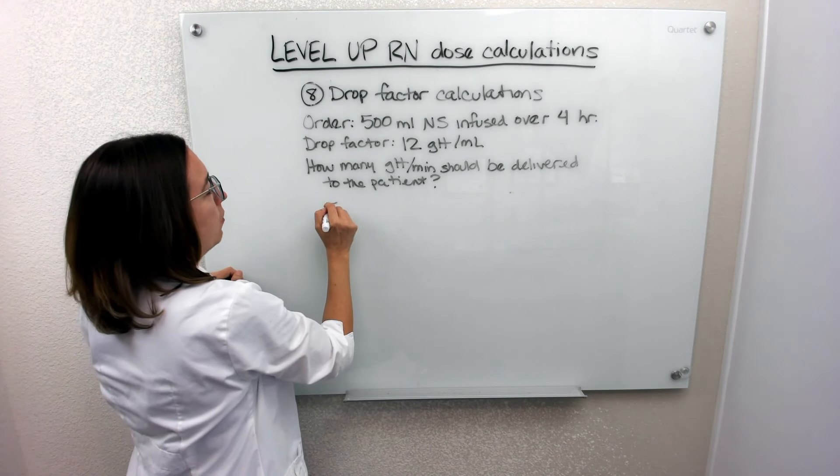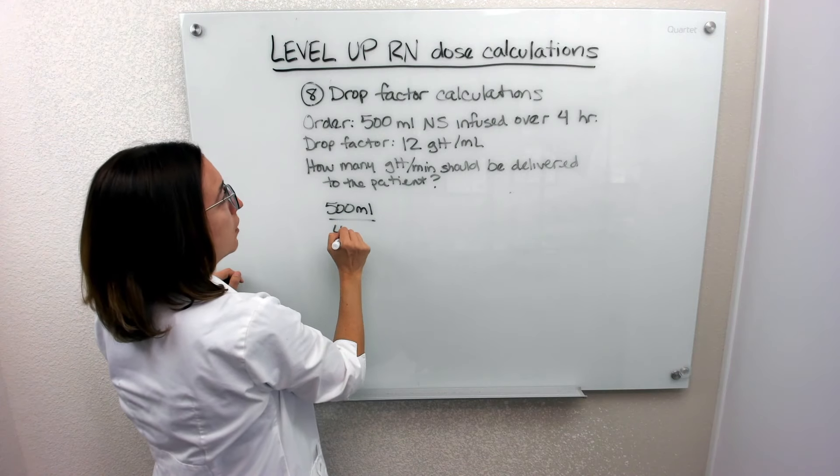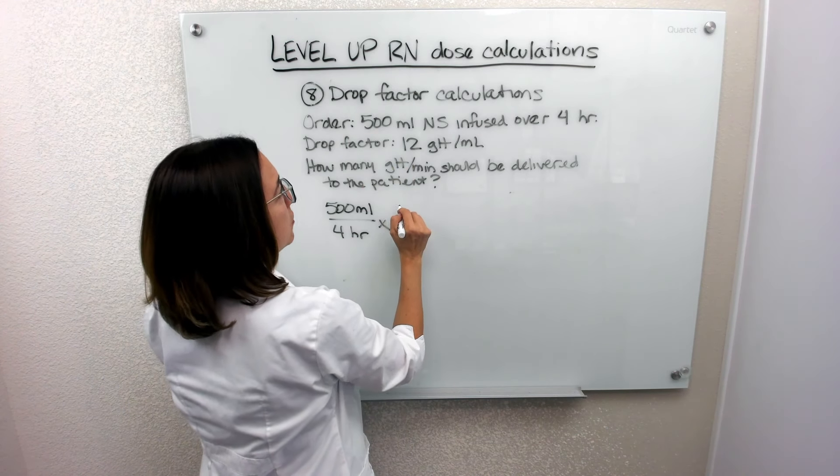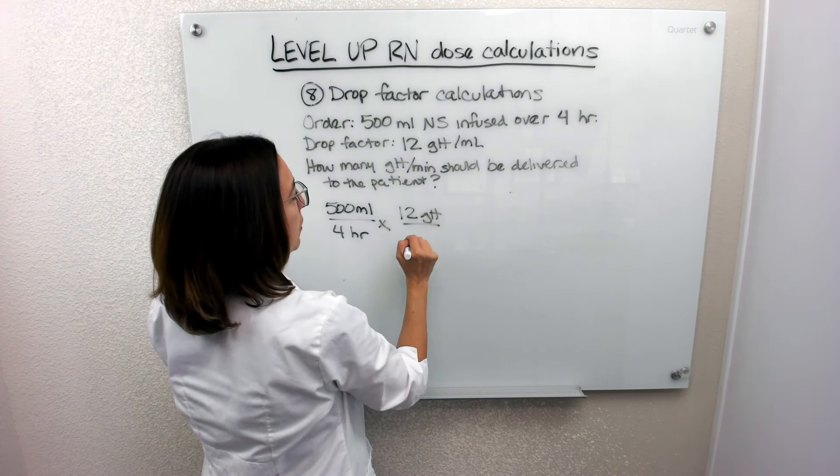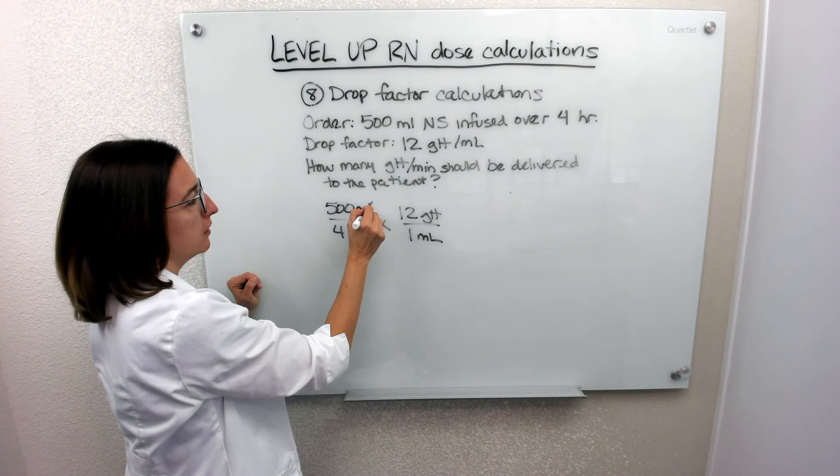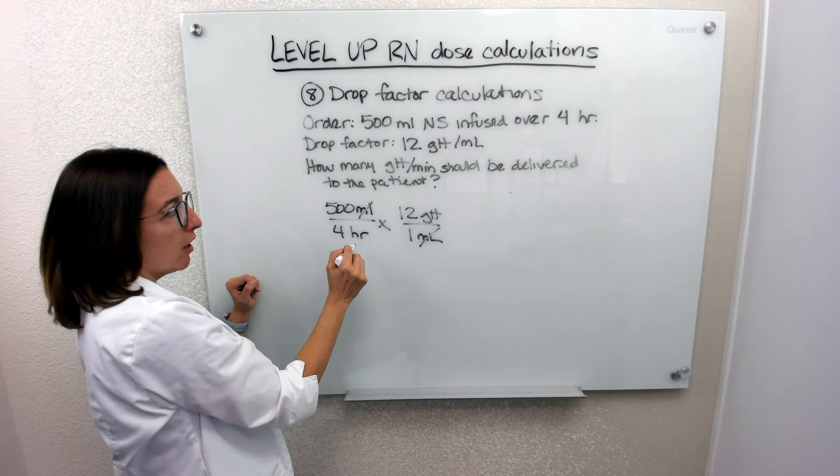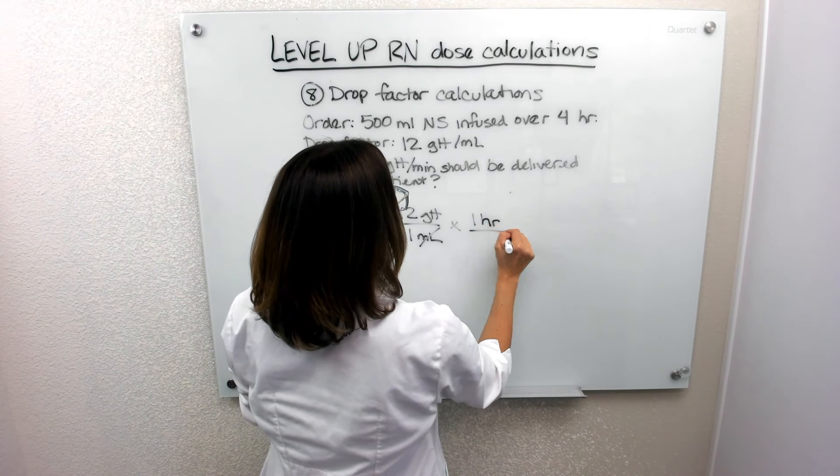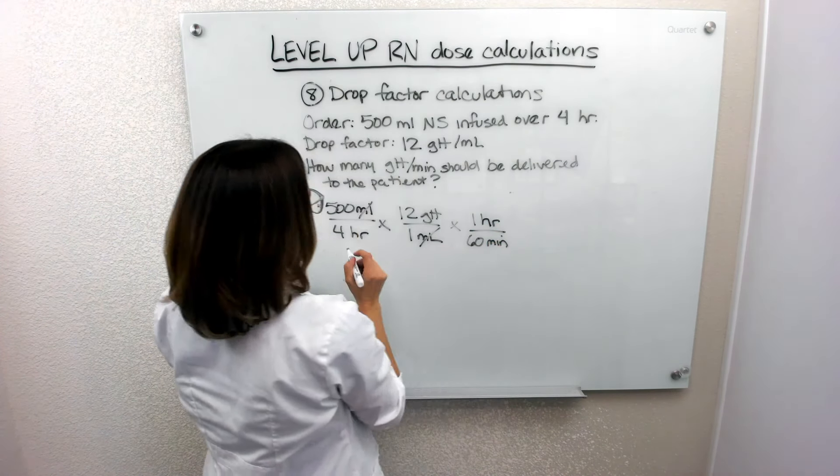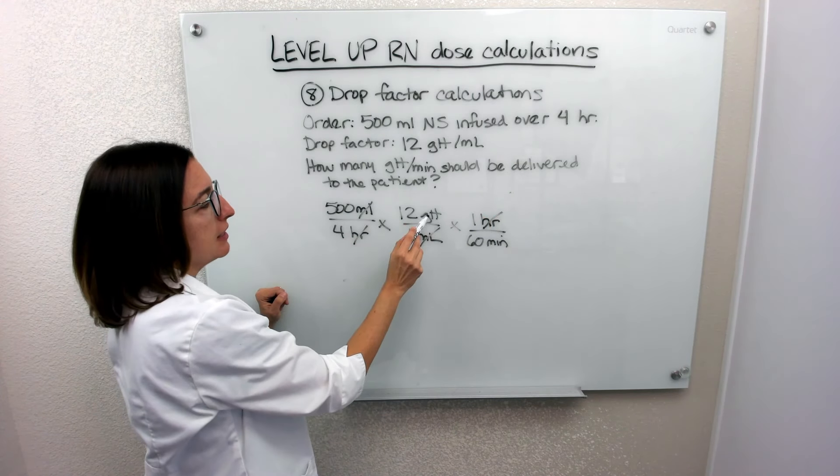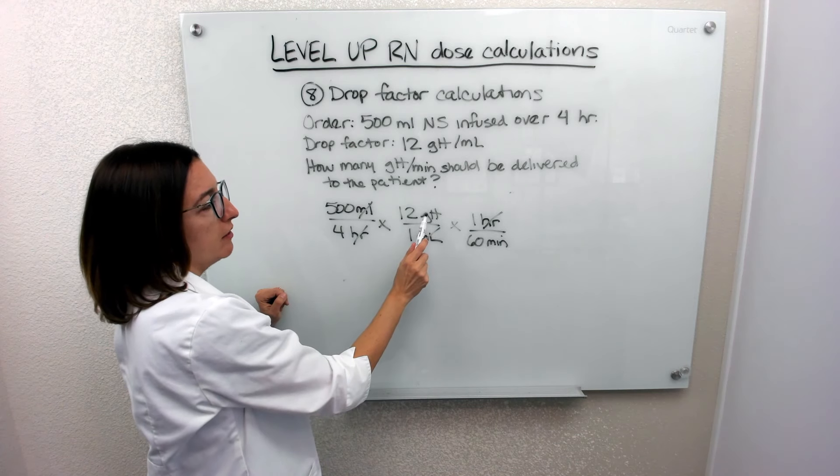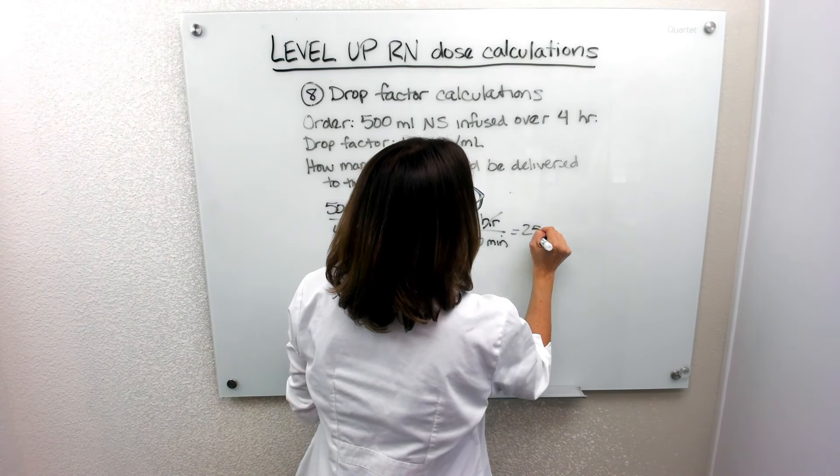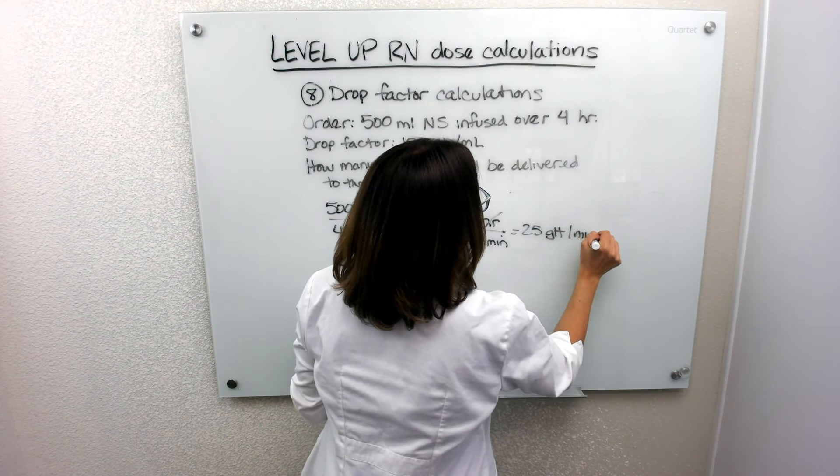So we want 500 milliliters infused over four hours. And we know our drop factor is 12 drops per one milliliter. So our milliliters cross off here. And we have drops per hour. But we want drops per minute. So we're going to have to say one hour equals 60 minutes to allow us to cross off our hours. And here we can see when we multiply this out and divide that we'll end up with drops per minute. So if you do that, you end up with 25 drops per minute.